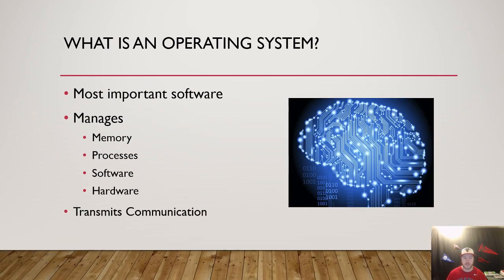The operating system is the most important piece of software — it's basically the brain of your computer. It manages every time you open up a file, and it also manages your software and memory on the computer. It also transmits the communication between you and the computer, so whenever you type on your keyboard or click your mouse, the operating system executes those inputs, processes them, and gives you the output that you're expecting.